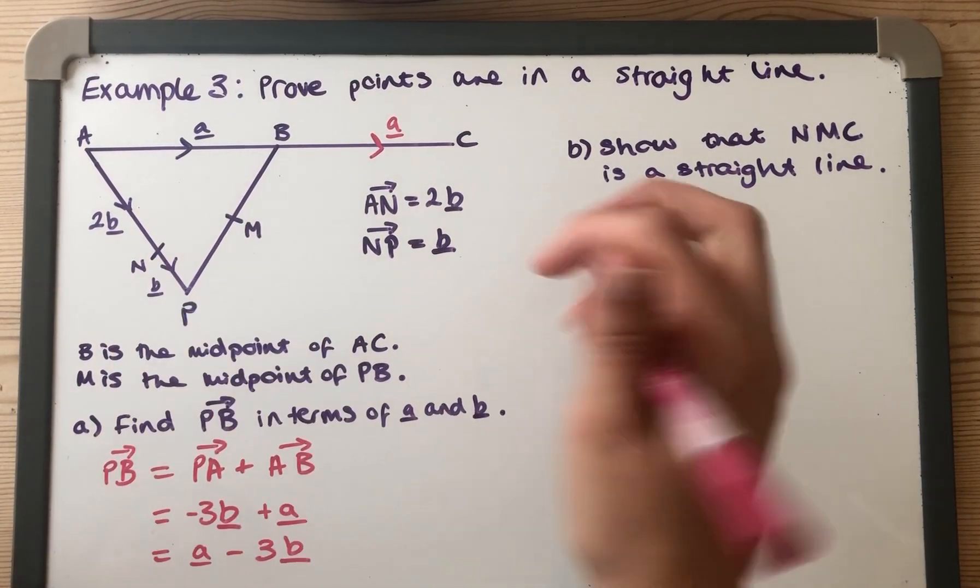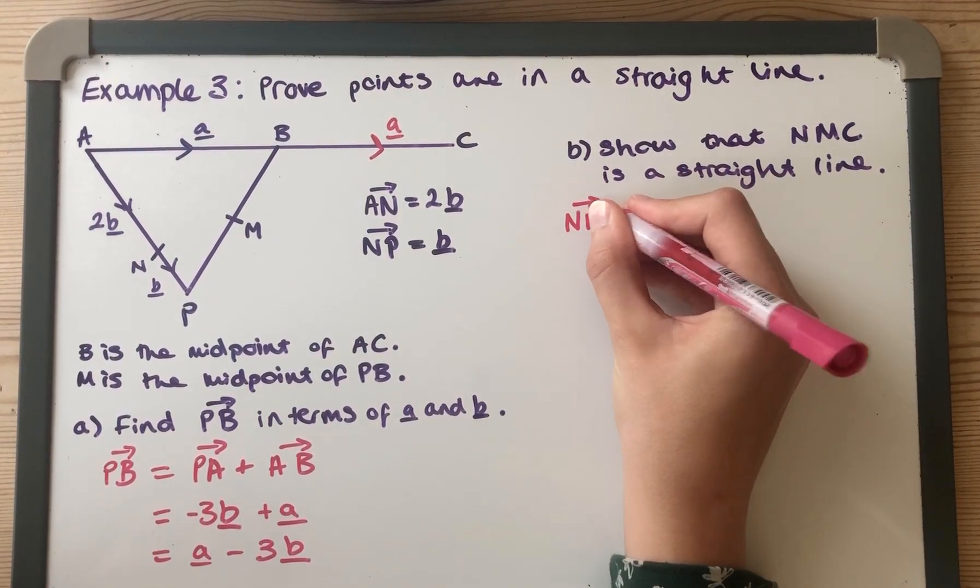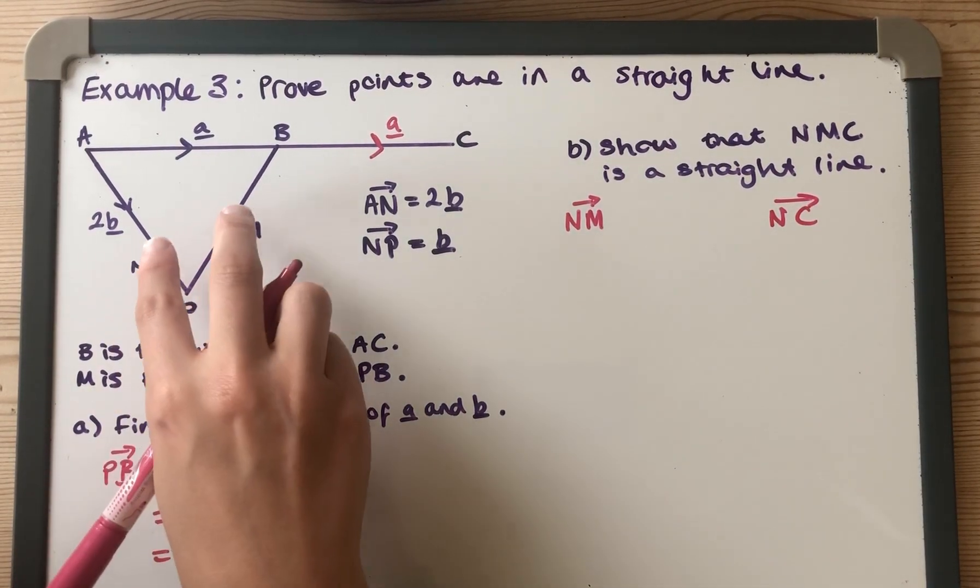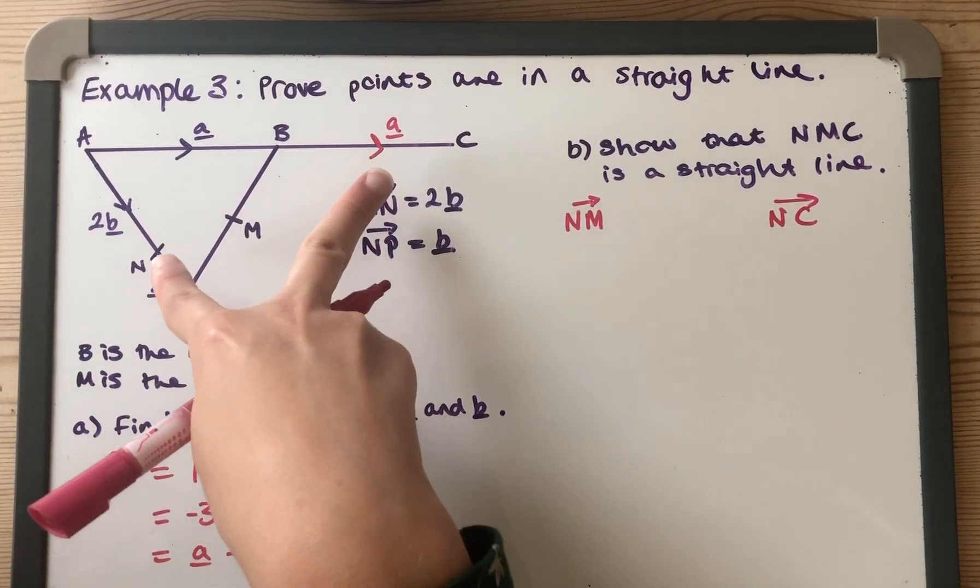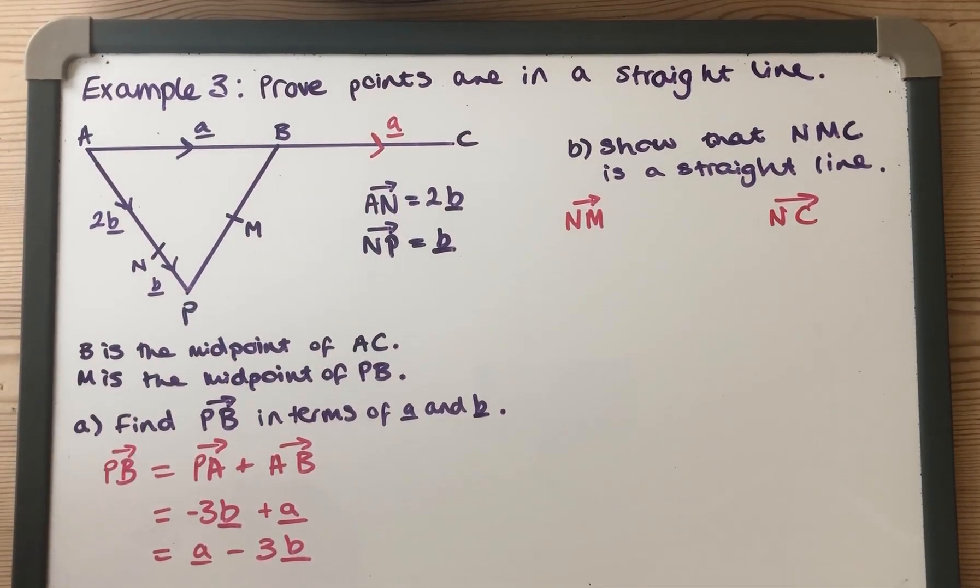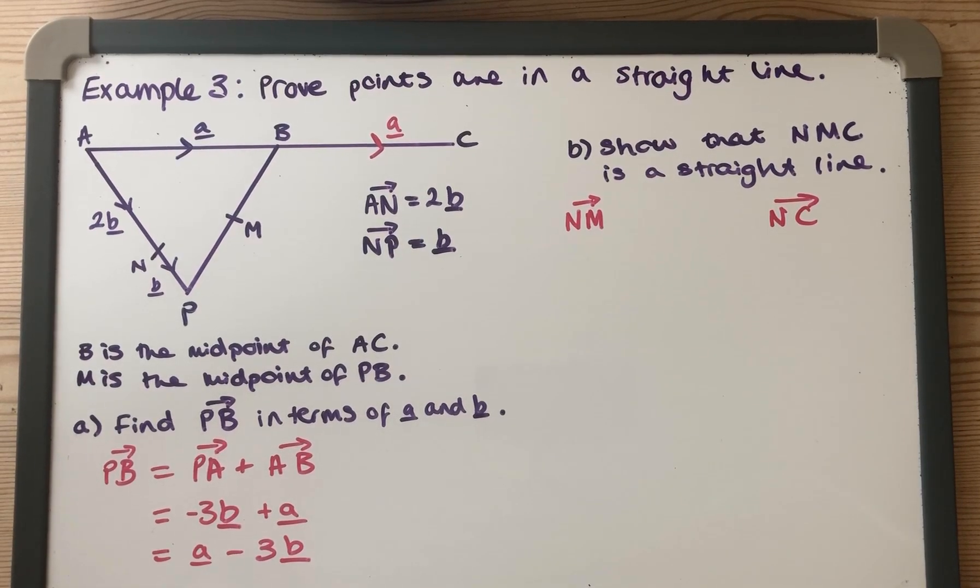The point in common I'm going to use is N, so I'm going to think about N to M and also N to C, because then I would have a point in common and I'll be showing that this vector and that vector are parallel, so then they must be in a straight line. That's how I'm going to do it. Again there are other methods, this is just one way.